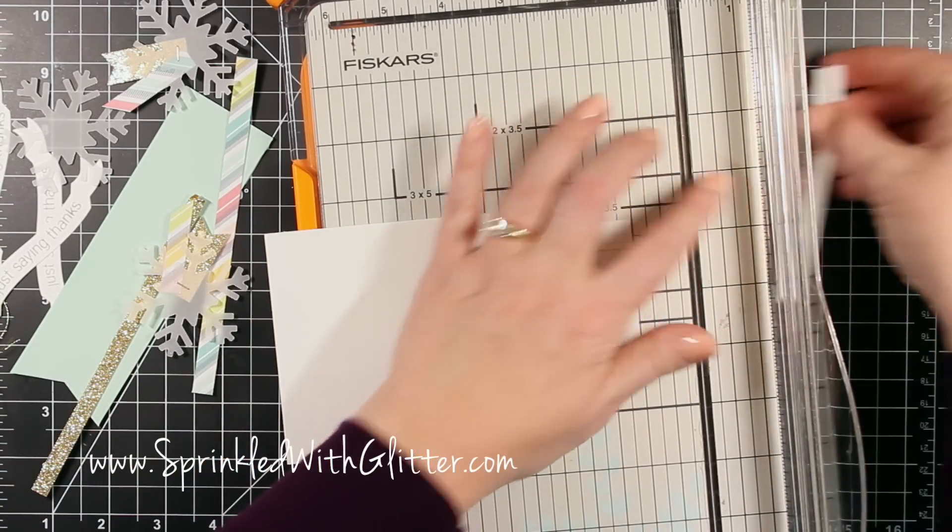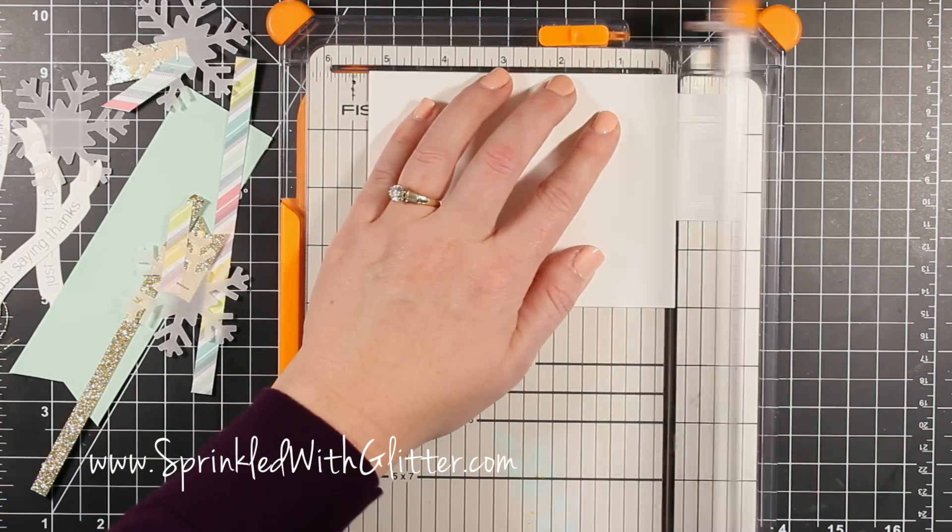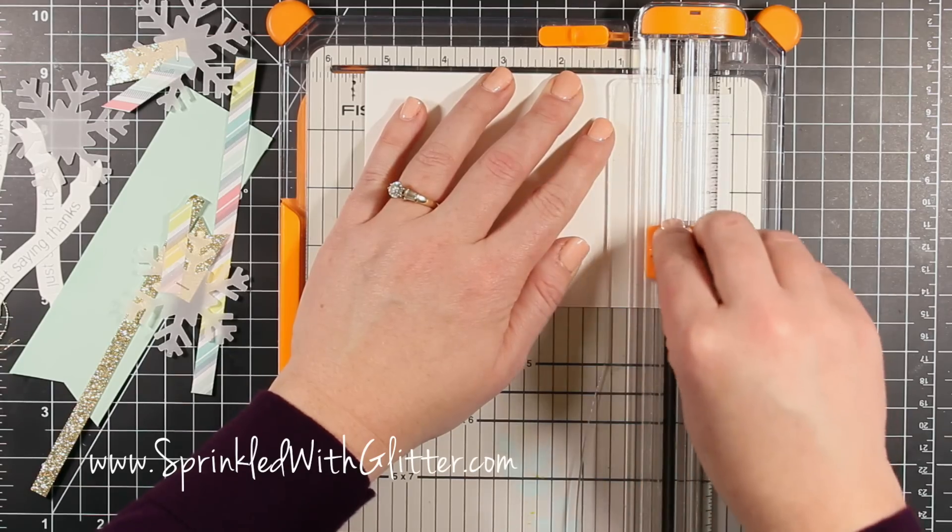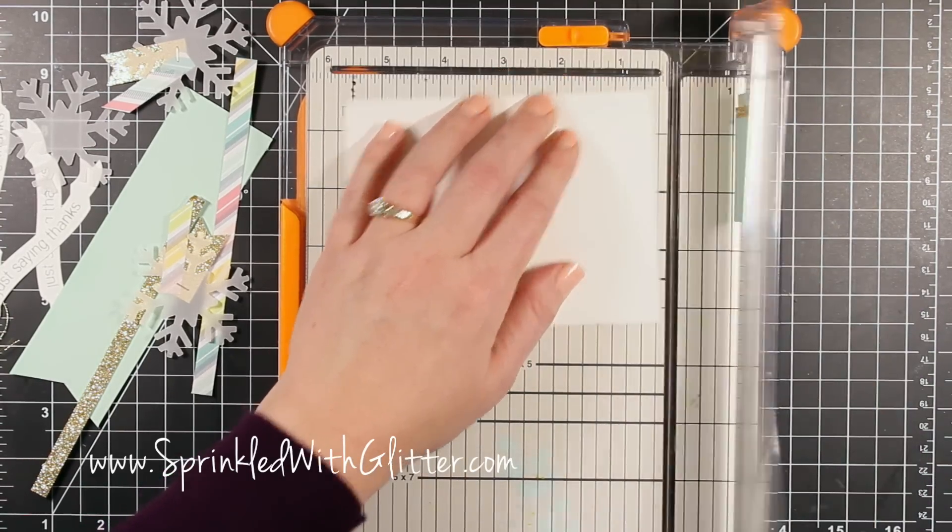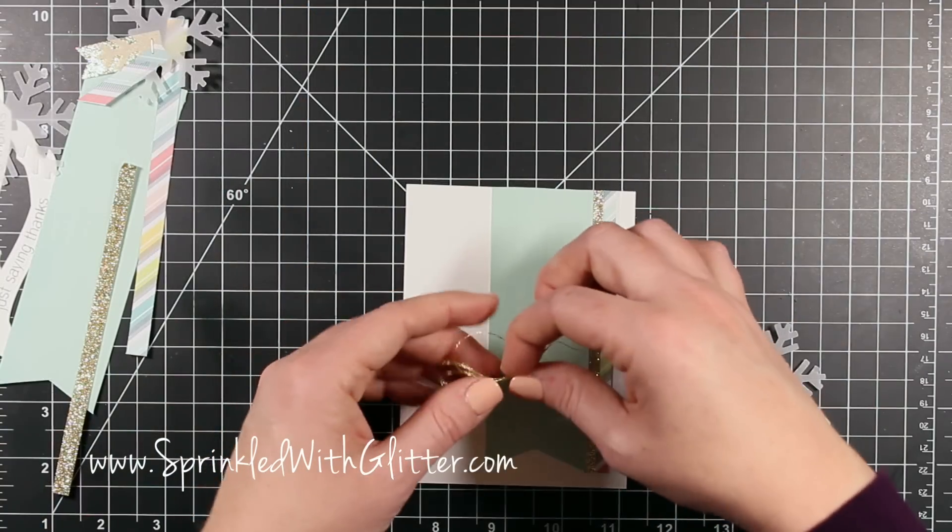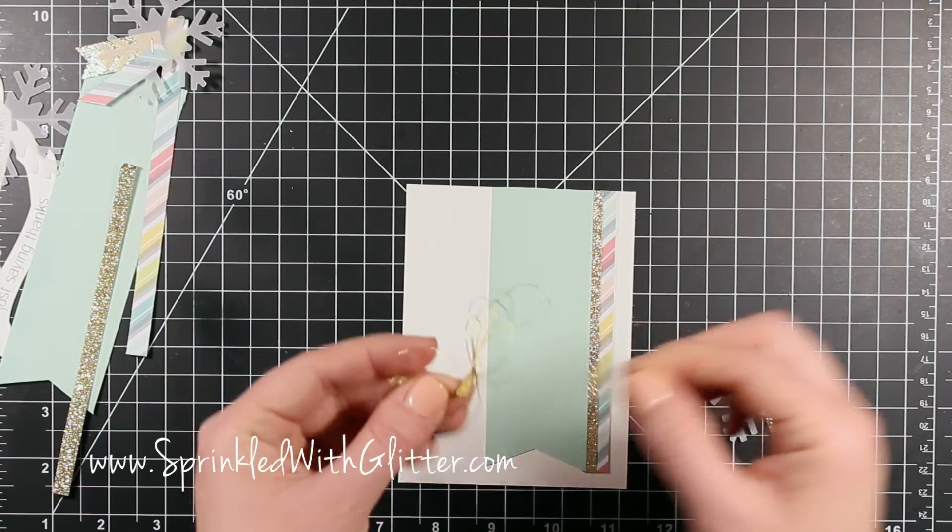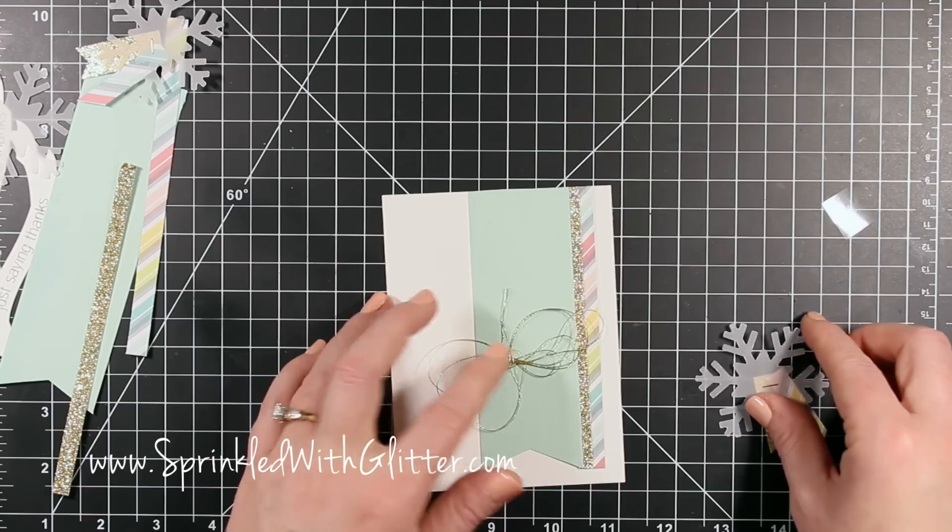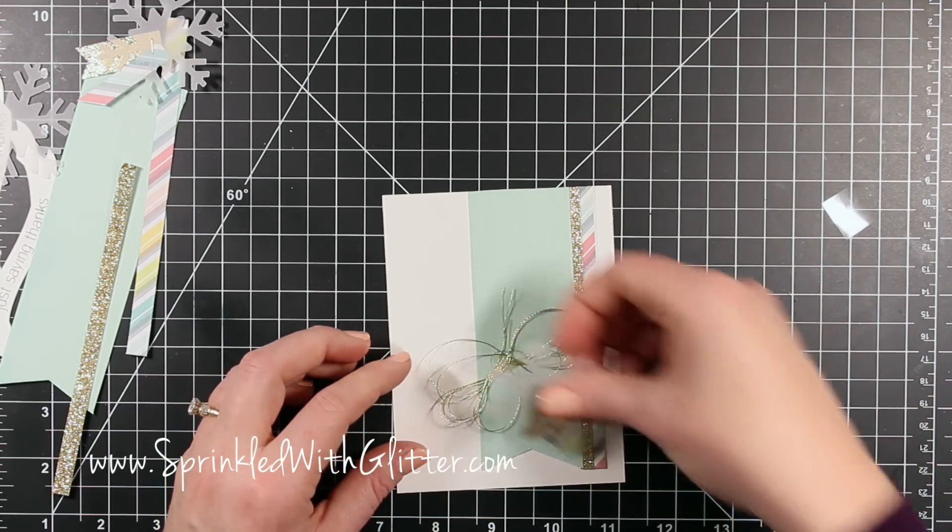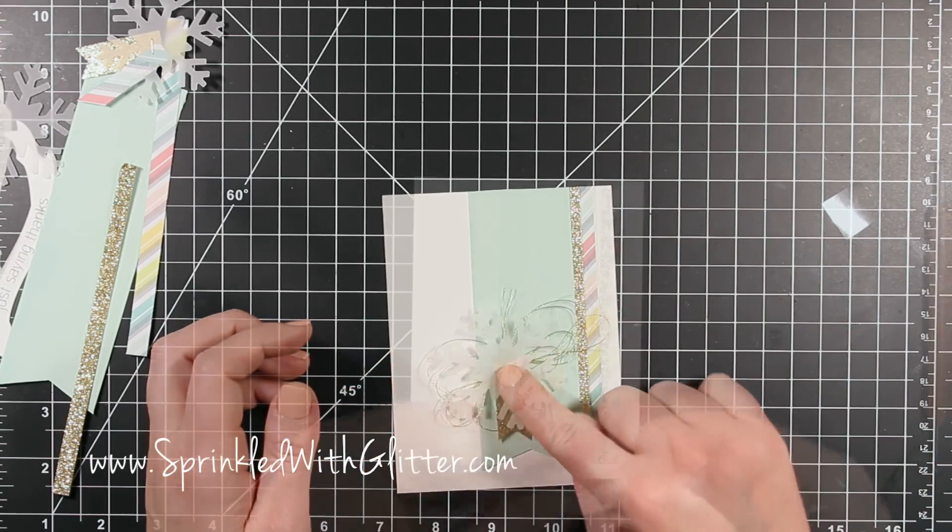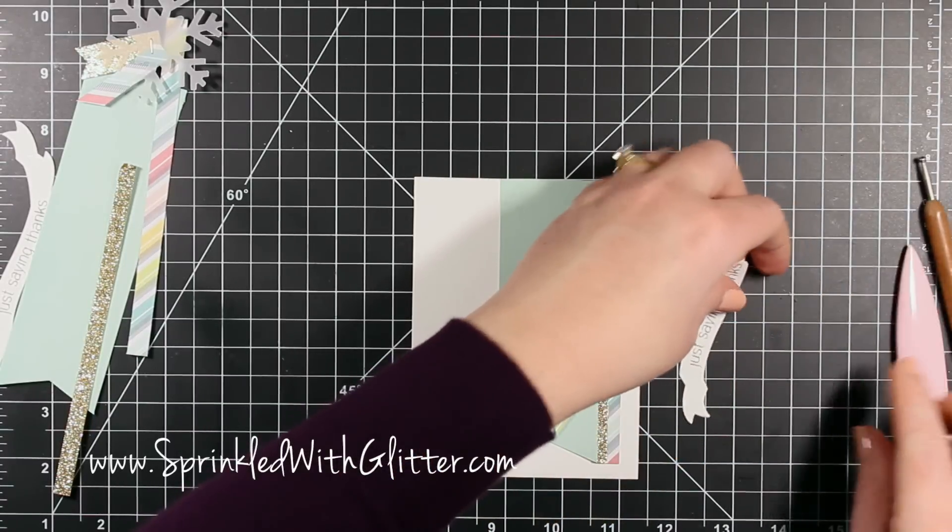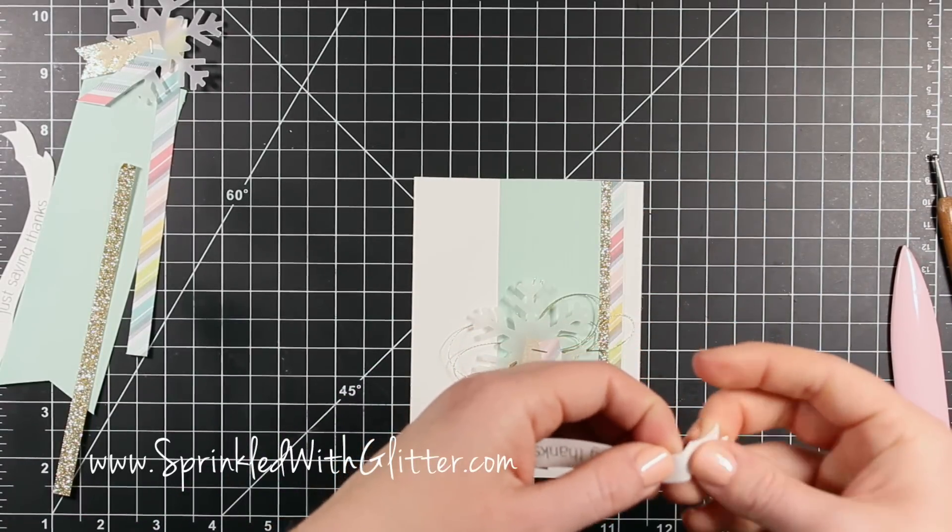Once I got that all adhered down, I went ahead and used my paper trimmer to trim off the rest of that. I could have used my scissors, either one works, but I thought I'd get a cleaner, straighter cut along that large piece with my paper trimmer. So now that I have that all trimmed down, it's time to start assembling this. I just took the backer off of that glue dot and applied that little nest there, and then my snowflake with the foam adhesive over that.